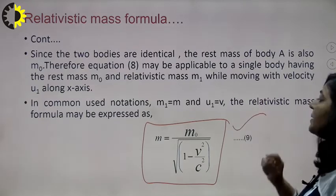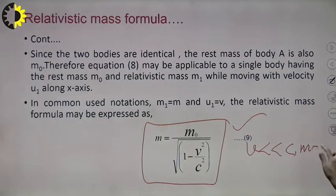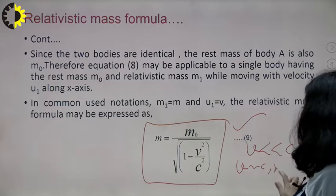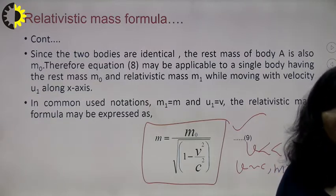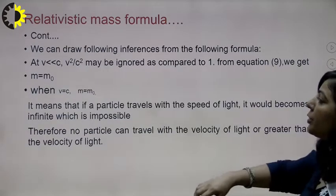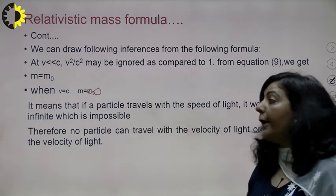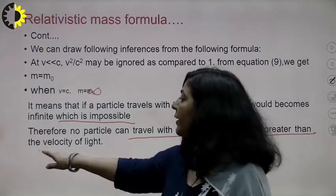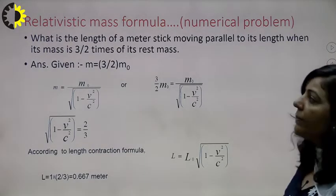For any particle moving with velocity V comparable to C, the relativistic mass is M = M₀ / √(1 - V²/C²). Three conclusions: first, if V is very small compared to C, then M equals M₀ — classical mechanics, mass unaffected by motion. Second, if V is comparable to C, then M is always greater than M₀. Third, if V equals C, then M becomes infinite — which is impossible, so no particle can travel at or faster than the speed of light.